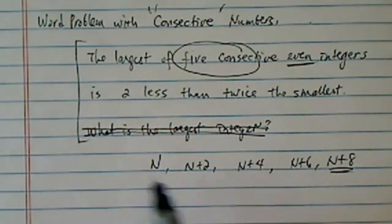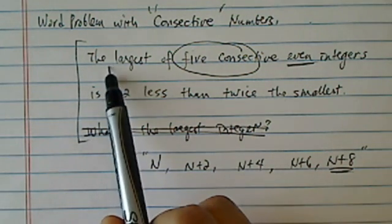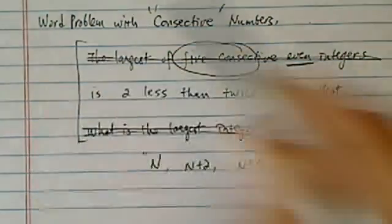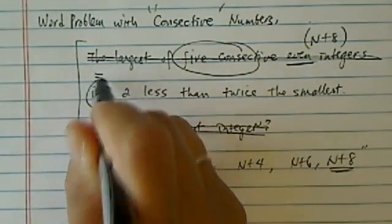And once you have those consecutive listed out, what you need to do is then go back to the word problem and literally drag the equation out of those words. It said the largest of the five consecutive integers, well we know the largest one is now it's n plus 8. The word is equals.